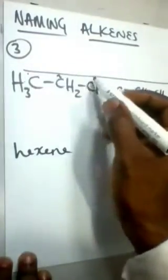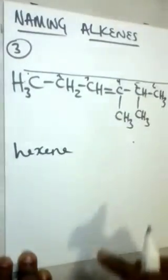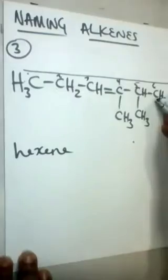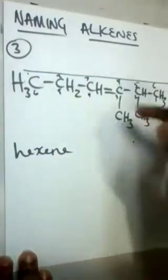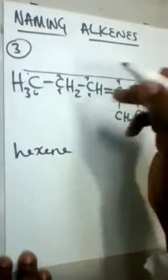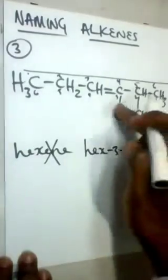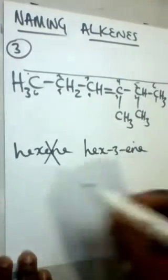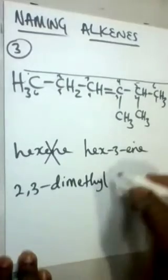If we number the carbon atoms from the left — one, two, three, four, five, six — the double bond will be on carbon three. Numbering from the right also places it on carbon three. But there are methyl groups on carbon number three, so it's better to number from the right: one, two, three, four, five, six. Therefore there are methyl groups on carbons two and three — a 2-methyl and a 3-methyl. The double bond is on carbon number three, so this is 2,3-dimethyl-hex-3-ene.